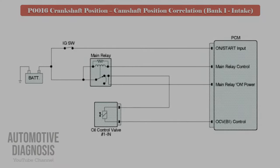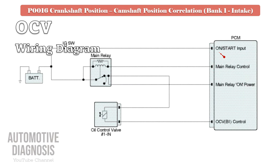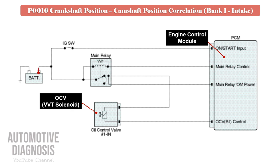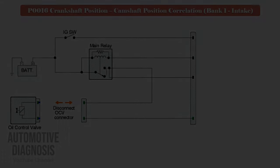To start testing the OCV, it is very important to review the OCV wiring diagram. As soon as you turn on the ignition switch, power supply will be provided to OCV via the engine main relay, so you must have battery voltage on that pin when ignition is on or when the engine is running. Also, OCV is controlled by PCM using the other wire, so the control line must be checked too.